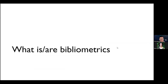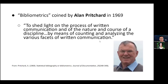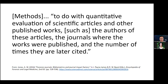What is bibliometrics? According to the term coined by Alan Prichard in 1969, bibliometrics is to shed light on the process of written communication and of the nature and course of a discipline by means of counting and analyzing the various facets of written communications. Regarding bibliometric methods, it deals with quantitative evaluation of scientific articles and other published works, such as the authors, the journals where they were published, and the number of times they are later cited.